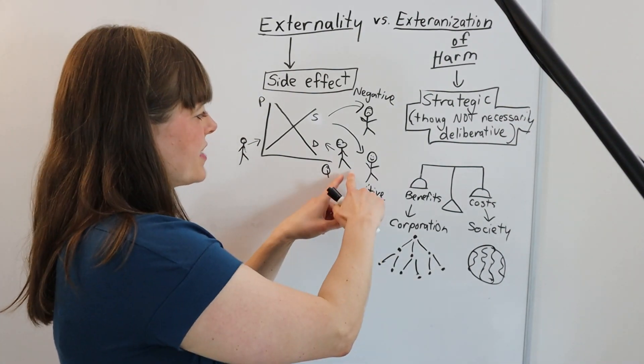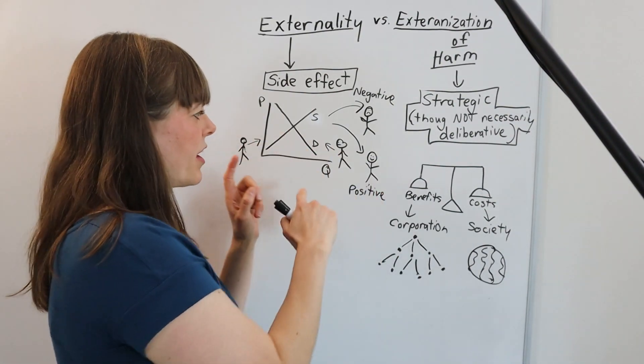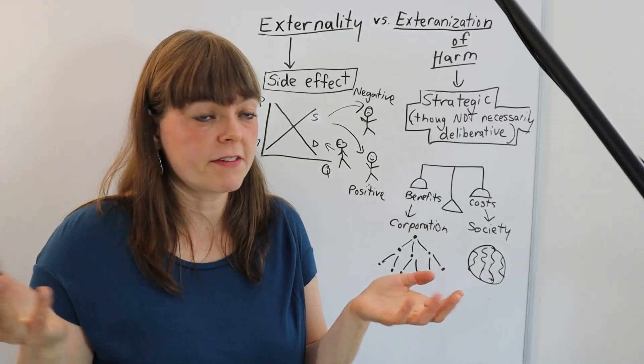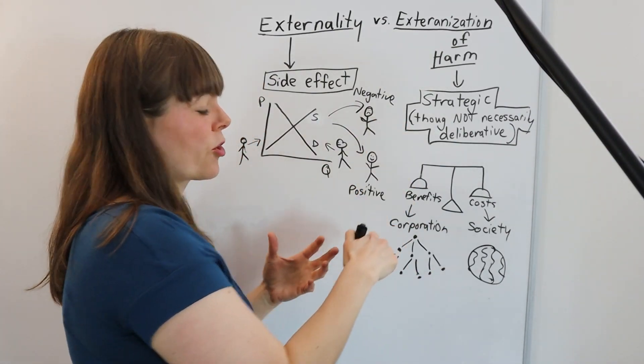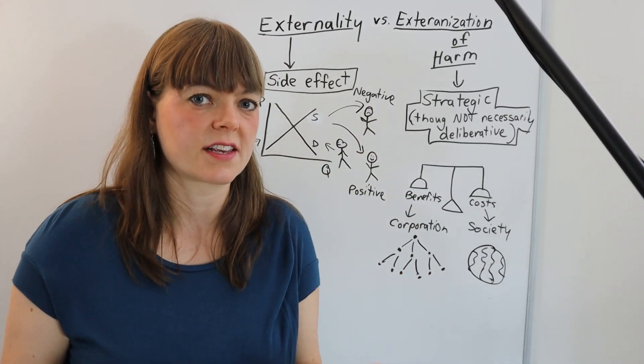And another way of framing this is you could say, well, each of these actors in this market could weigh costs and benefits and could think about these people who are experiencing the negative externalities.